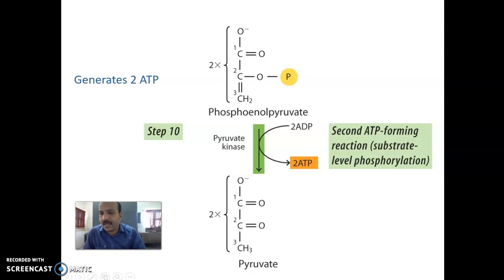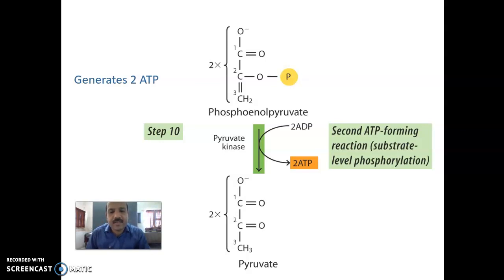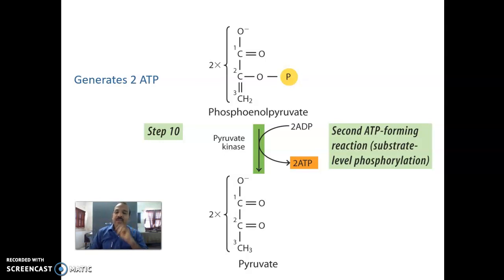The last step: phosphoenolpyruvate is converted into pyruvate by the enzyme pyruvate kinase. Here, another important 2 ATP are produced — the second substrate-level phosphorylation reaction. So the final product of glycolysis is pyruvate.